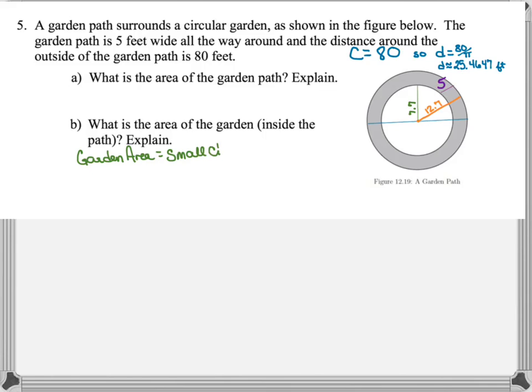I actually found the area of the garden first, which is that small circle on the inside. Since it has a radius of 7.7, I need to square the radius and multiply it by pi, and that will give me 59.79 pi, or 187.8359 square feet.